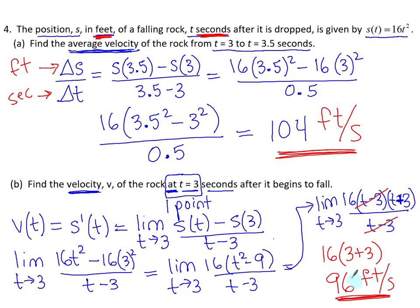Notice how that's very close to that average rate of change over the time interval that's close to that one point in time. Think about why at 3 seconds the velocity is lower than the average over the interval from 3 to 3.5 seconds.